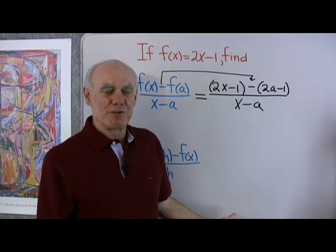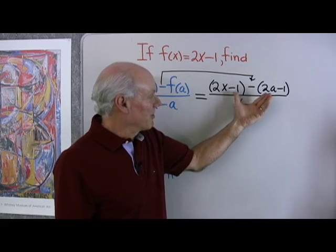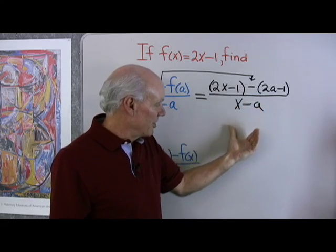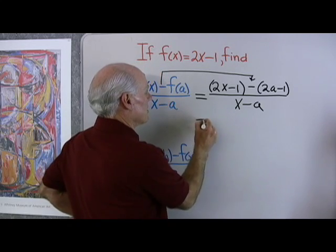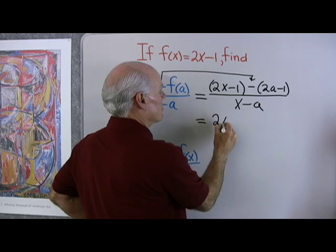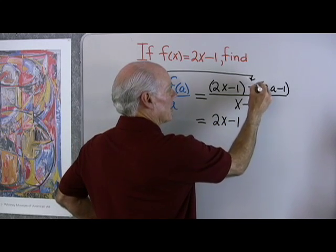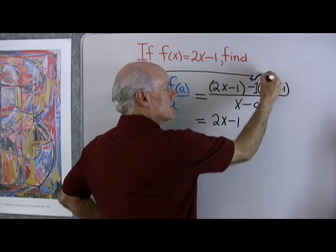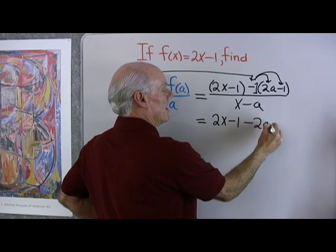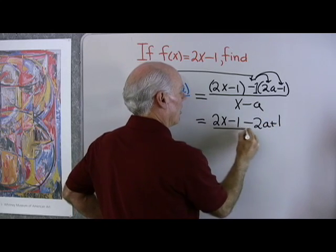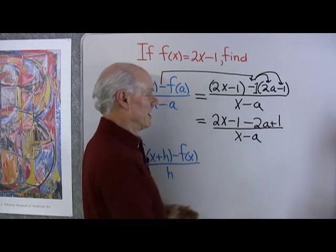That's all there is to the function notation. The rest is just algebra. So if I get this down correctly and I can do the algebra, I'll have no problem getting the right answer. Next, let's remove these parentheses. I have 2x minus 1. Remember, you can think of this as negative 1 times each thing inside there. So I have minus 2a plus 1, all divided by x minus a.